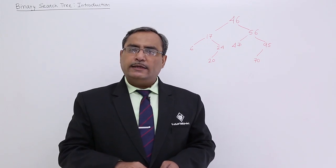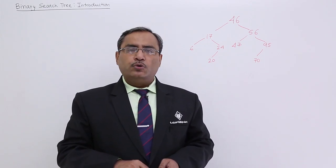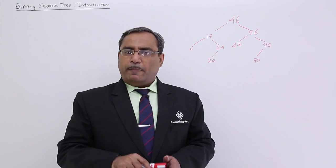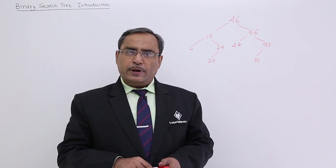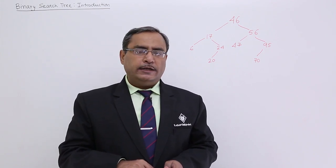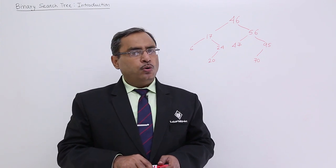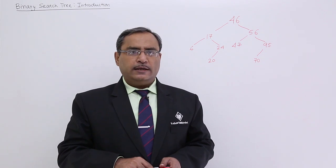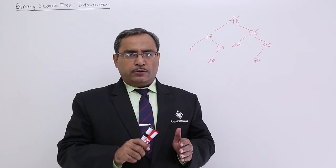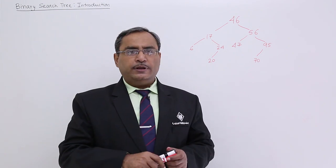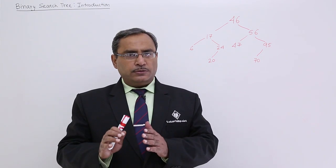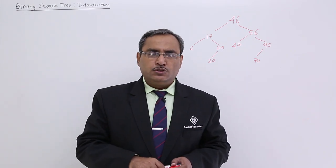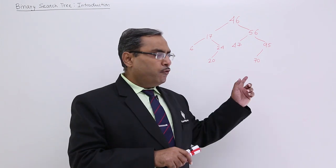In this session we are discussing binary search tree, one of the most important data structures. A binary search tree has some properties. Property number one: it should be a binary tree. Property number two: no value in the binary search tree will be repeated. Property number three: for any node n, all the values of its left subtree will be lesser than n and all the values of its right subtree will be greater than n. To explain this, let us go for an example.